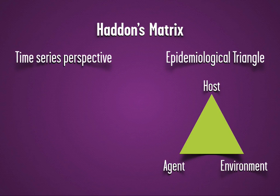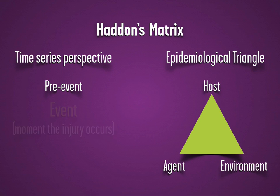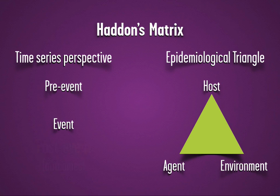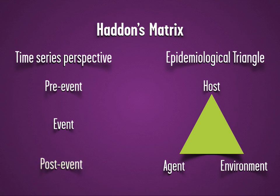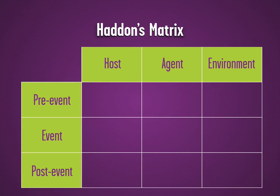A time series perspective includes pre-event, events leading up to the injury; event, the moment the injury occurs; and post-event, or injury outcomes. Haddon combined these to produce Haddon's matrix, in which the host, agent, and environment are all considered pre-event, event, and post-event.